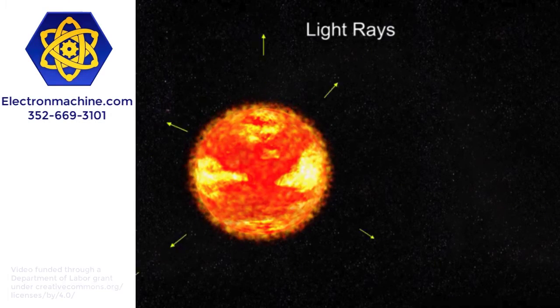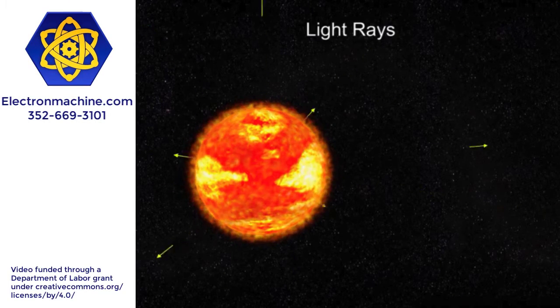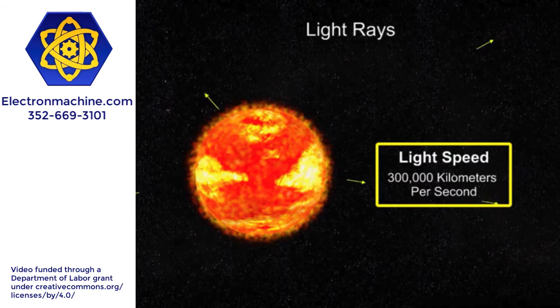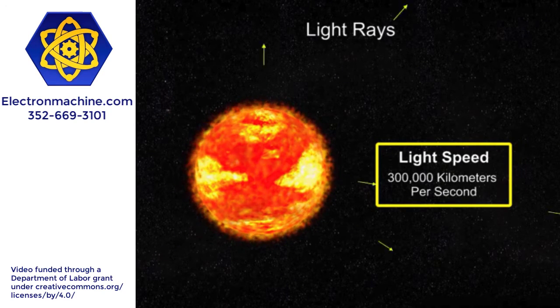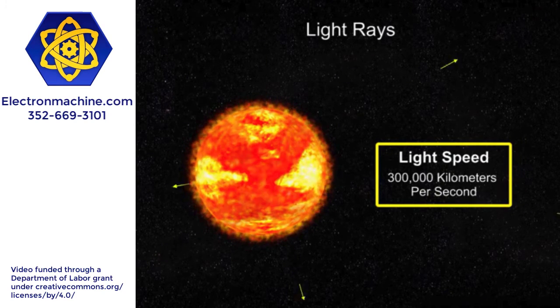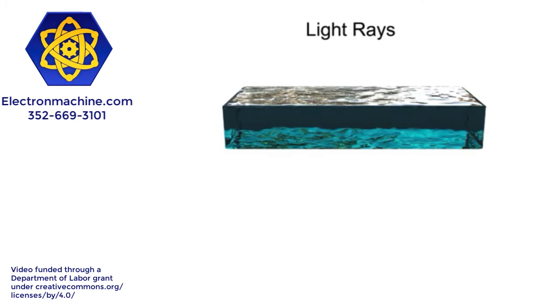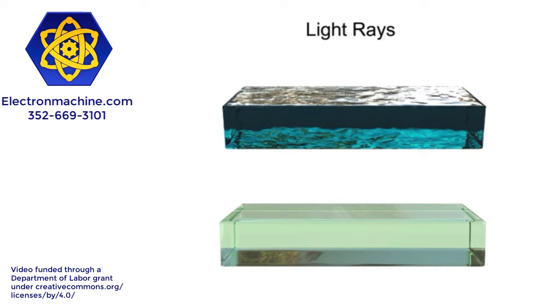Light rays travel through space in a straight line at approximately 300,000 kilometers per second. As light passes through a transparent medium, such as water or glass, its speed is decreased.